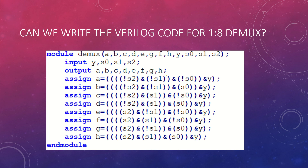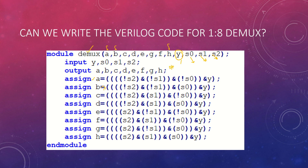Now let's implement it in Verilog. The module is named 'd_multiplexer' with ports A, B, C, D, E, F, G, H as outputs and Y as the data input, with S0, S1, S2 as select lines. Output A is obtained when NOT(S1) AND NOT(S2) AND NOT(S0) — all three zeros — passes Y through. For the last case where all three are 1, Y comes out as H. This is the simplest module for implementing a 1-to-8 DMUX.